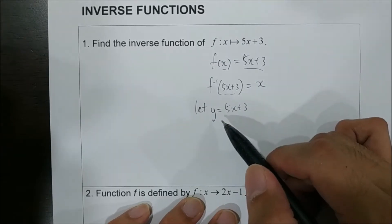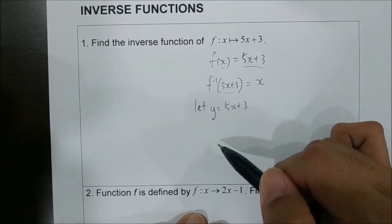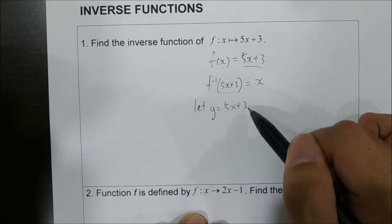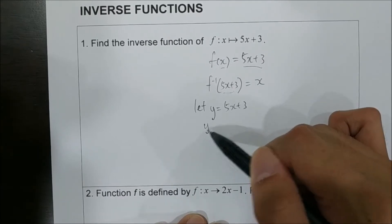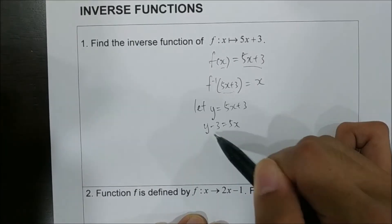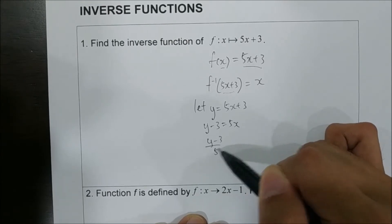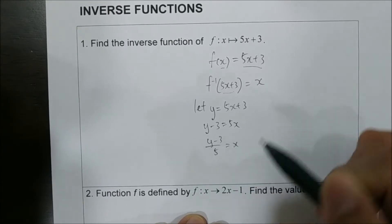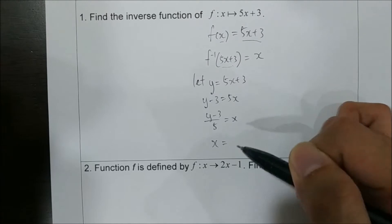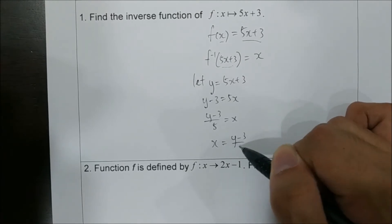We want to find the subject of x. We move the 3, and then we move the 5, so you get y minus 3 over 5 equals to x. So, x equals to y minus 3 over 5.